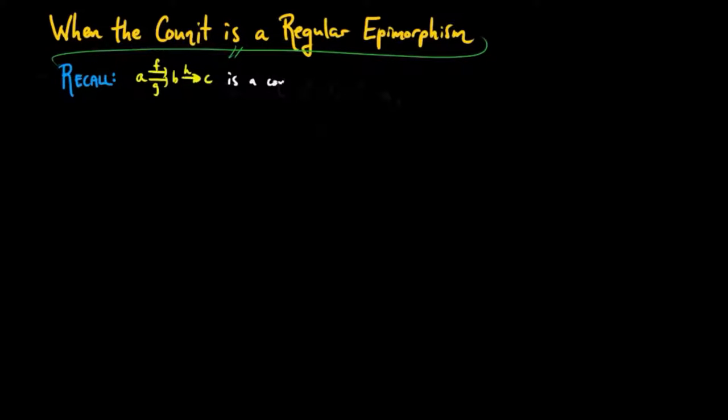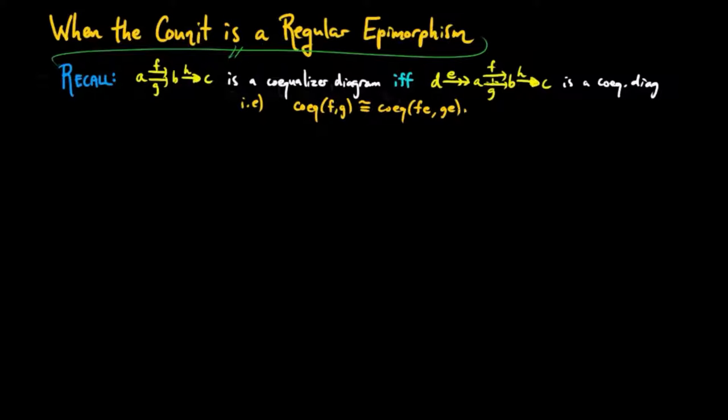Recall that the following is a co-equalizer diagram if and only if pre-composition by an epimorphism of this diagram is also a co-equalizer diagram. In other words, the co-equalizer of FG is equal to the co-equalizer of FEGE for each compatible epimorphism E.